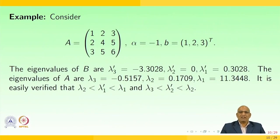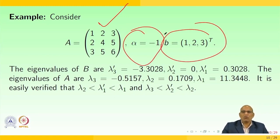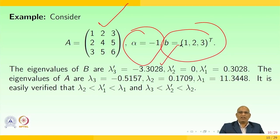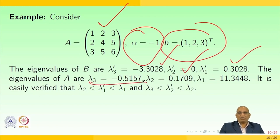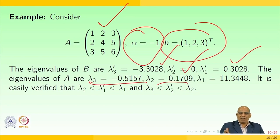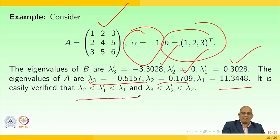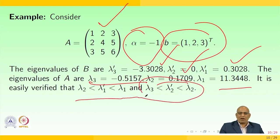To support this, let us look at another example. Consider this example where alpha equals minus 1. We have lambda 3 equals minus 0.5157, lambda 2 equals 0.1709, and lambda 1 equals 11.3448 as eigenvalues of A. And lambda 1 prime equals 0.3028, lambda 2 prime equals 0. It is easy to verify that lambda 2 is less than lambda 1 prime less than lambda 1, and lambda 3 is less than lambda 2 prime less than lambda 2.